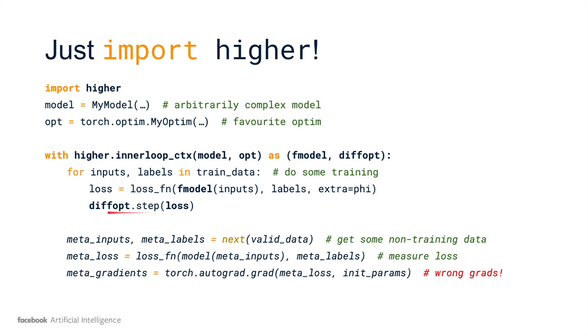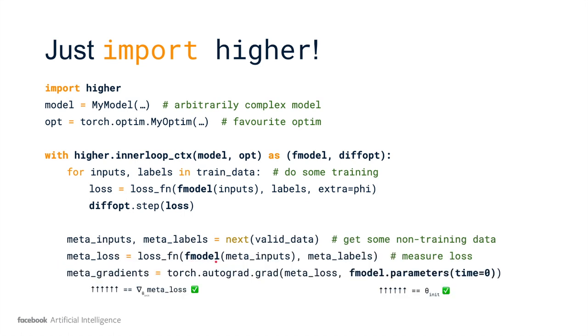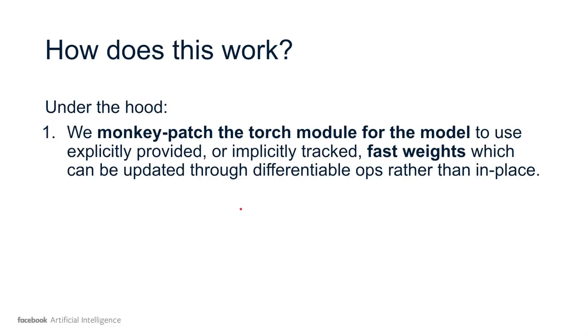Those are the minimal changes. But under the hood, this is sufficient for us to modify the computation of the meta loss by calling the f-model instead of the model. Now we can successfully take gradients of the meta loss with regard to the initial parameters, for example, by using this convenience function f-model.parameters, which allows you to take it with regard to a particular time step in your unrolled loop. Or we can simply take the gradient of that meta loss with regard to phi. That will automagically be the correct gradient with these minor changes.